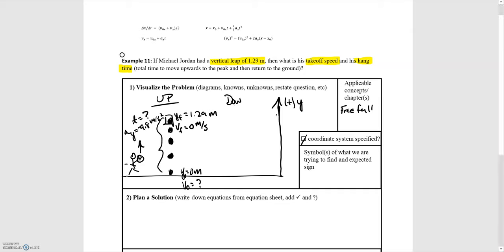For the downward portion, the motion diagram would look exactly the same except as he's going down closer to the ground his velocity would be increasing, and that reflects the increased spacing of the dots on the way downward. The downward time would have the same time that it takes for him to go up. So the total hang time t_hang is just going to be equal to 2t_up.